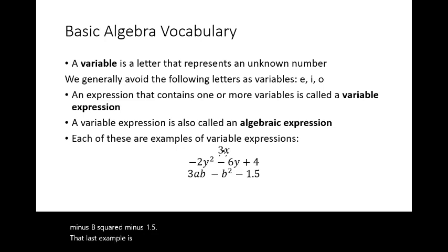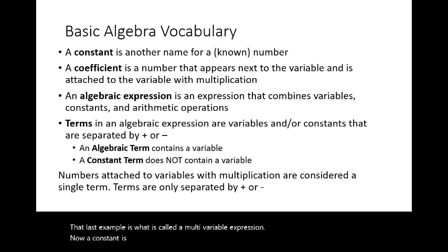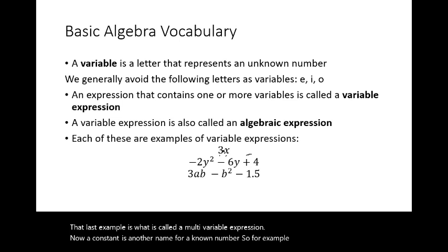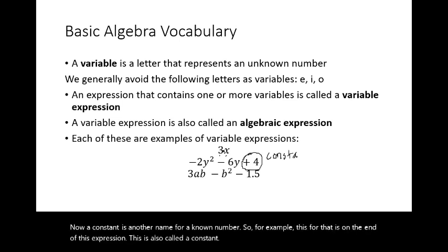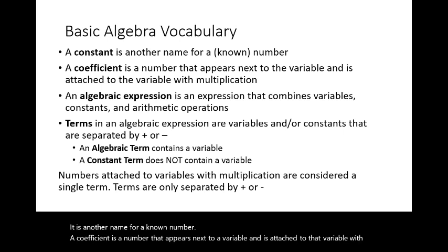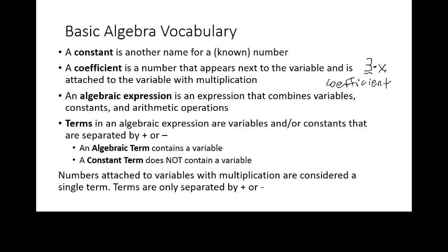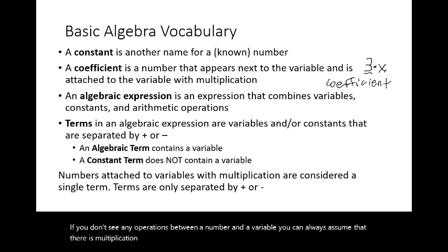That last example is what is called a multivariable expression. A constant is another name for a known number — for example, the 4 on the end of that expression is called a constant. A coefficient is a number that appears next to a variable and is attached to that variable with usually hidden multiplication. In the expression 3x, 3 is called the coefficient because it is a number attached to a variable with hidden multiplication. If you don't see any operations between a number and a variable, you can always assume that there is multiplication there.